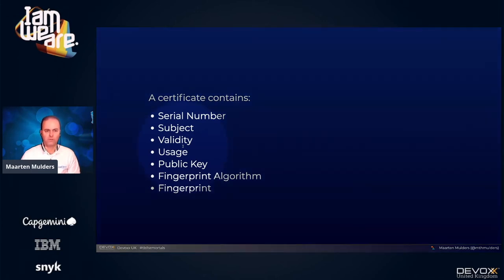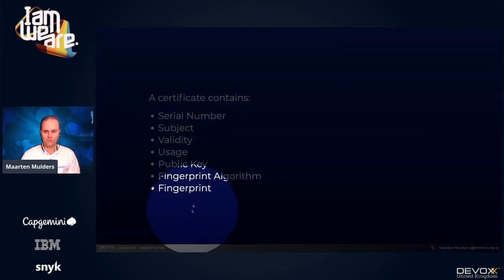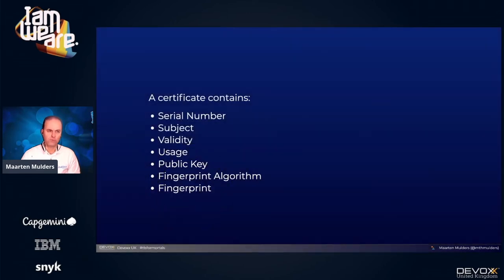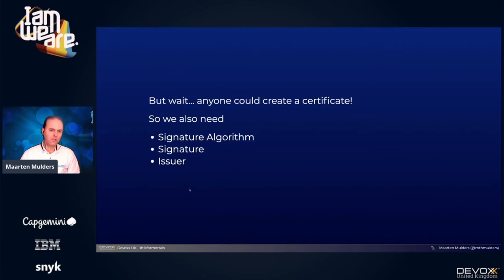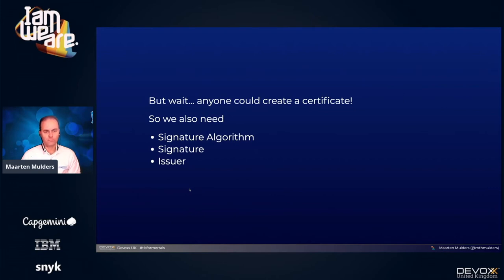Given that a certificate could be issued by anyone, a certificate needs an issuer — somebody else who issued the certificate and put their signature on it. We also need to specify which algorithm was used to calculate the signature. That means we need a way to generate a digital signature, and — you wouldn't have guessed — we can again use public and private keys.